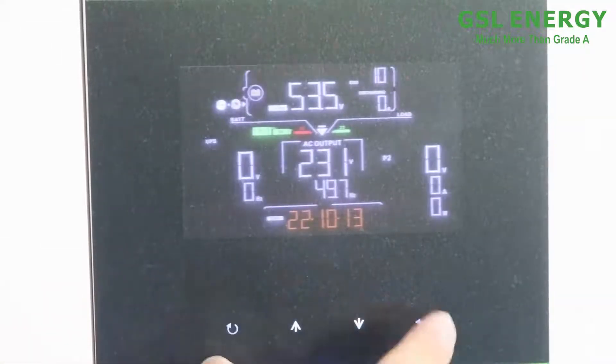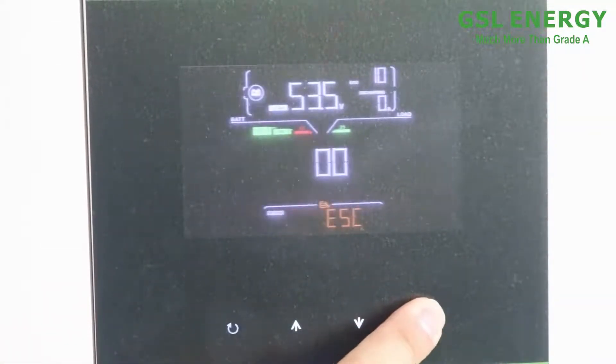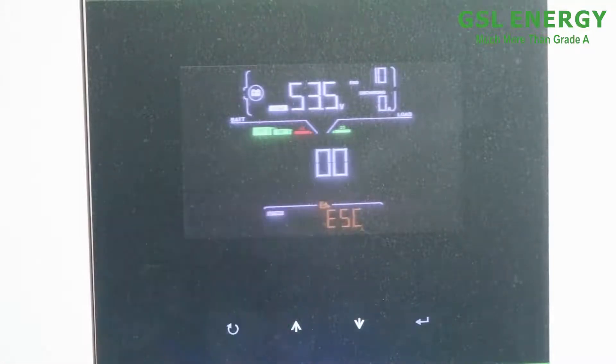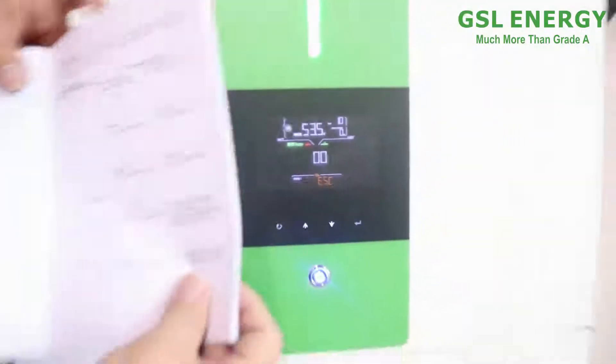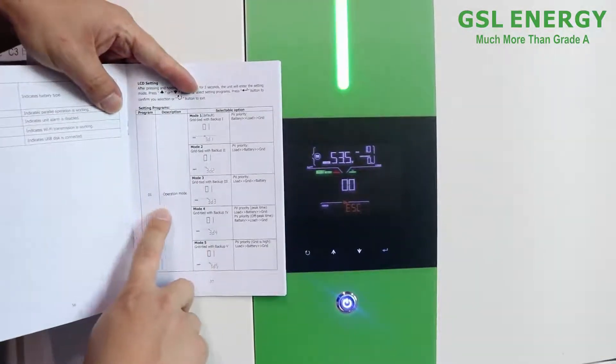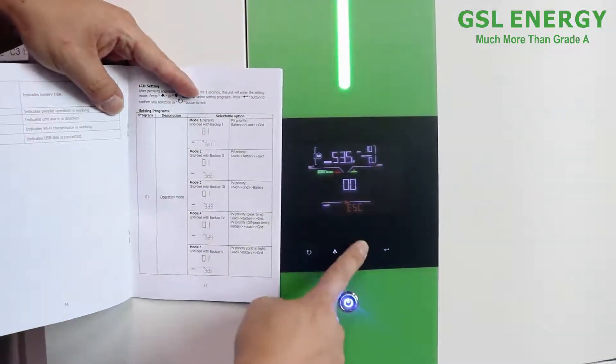And for the inverter setting, we can push it. Okay, it's to the A-term, the number. We can see it's on the user menu, the page 37. It's number one.